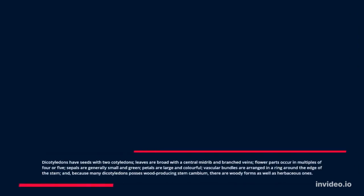Dicotyledons have seeds with two cotyledons. Leaves are broad with a central midrib and branched veins. Flower parts occur in multiples of four or five. Sepals are generally small and green. Petals are large and colorful. Vascular bundles are arranged in a ring around the edge of the stem. And, because many dicotyledons possess wood-producing stem cambium, there are woody forms as well as herbaceous ones.